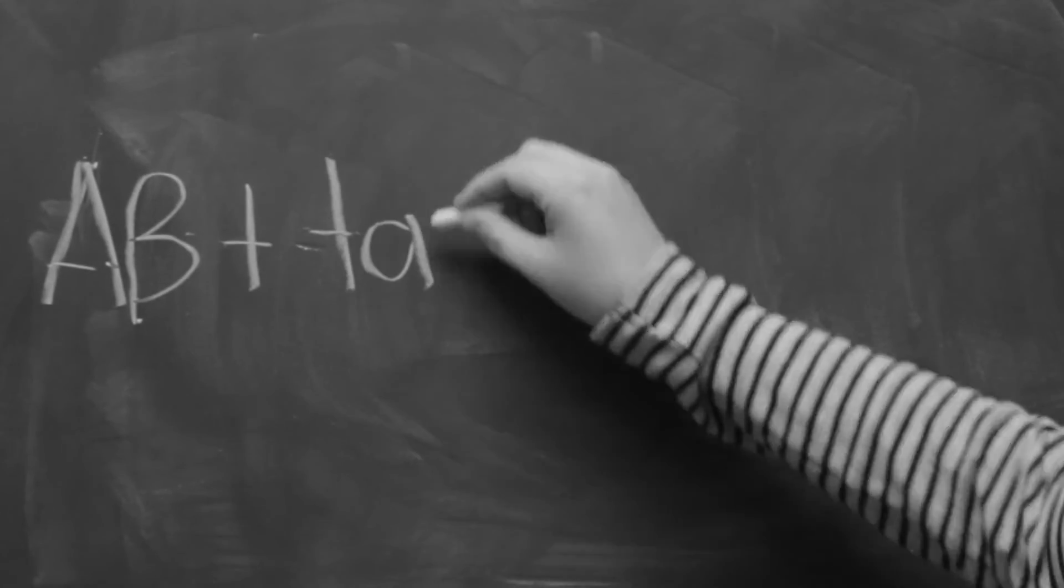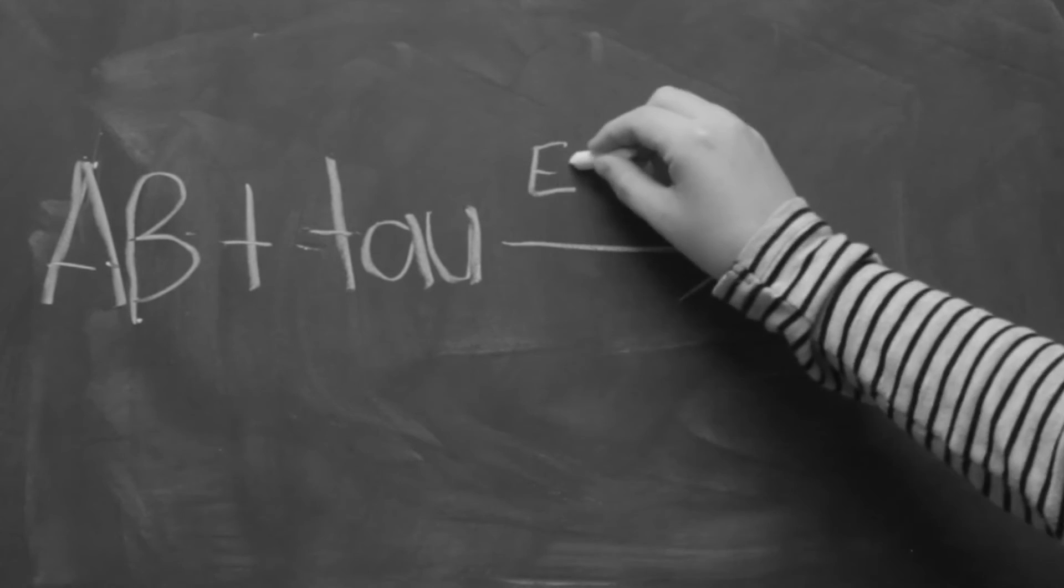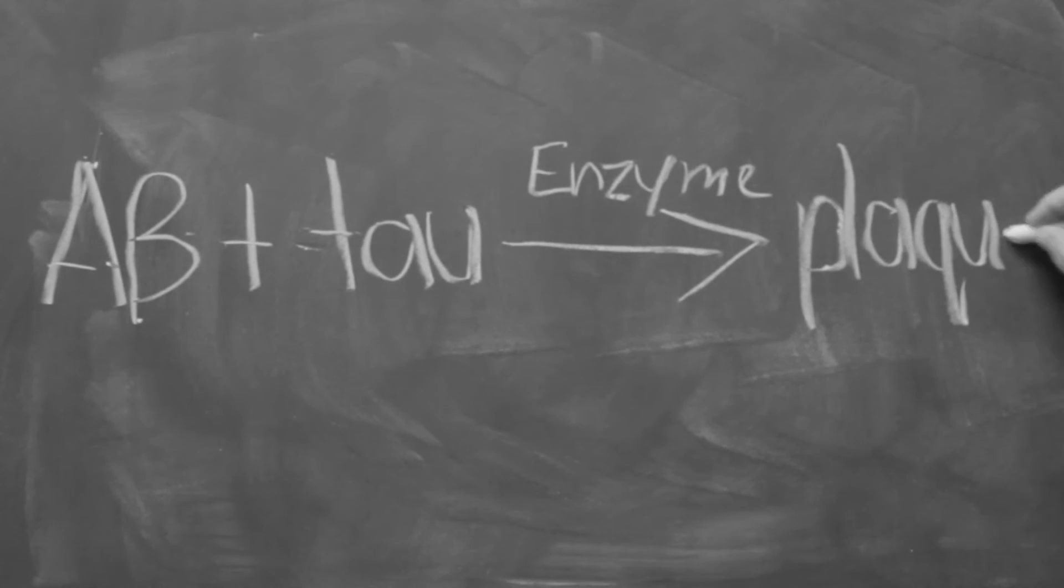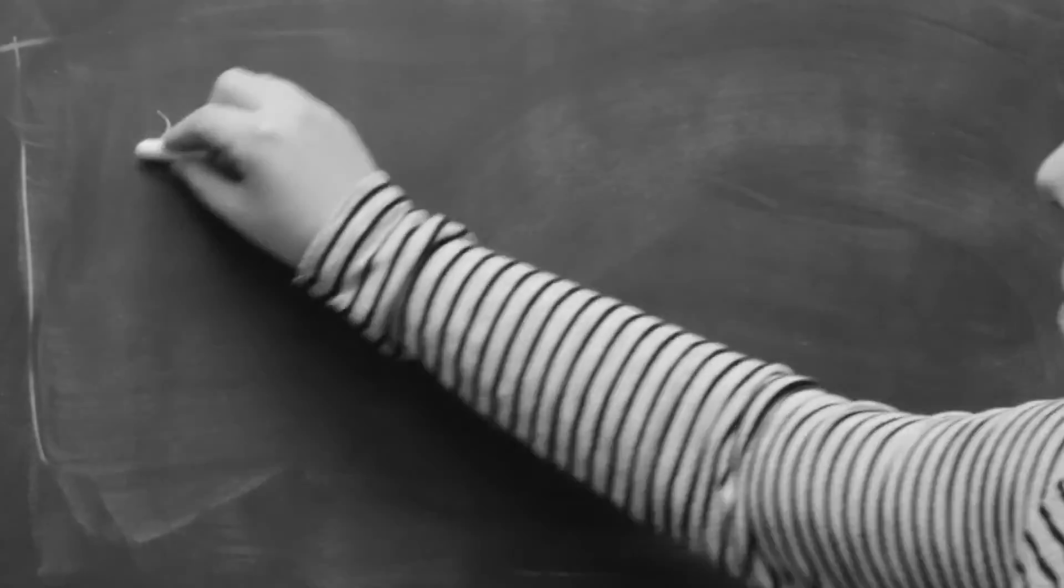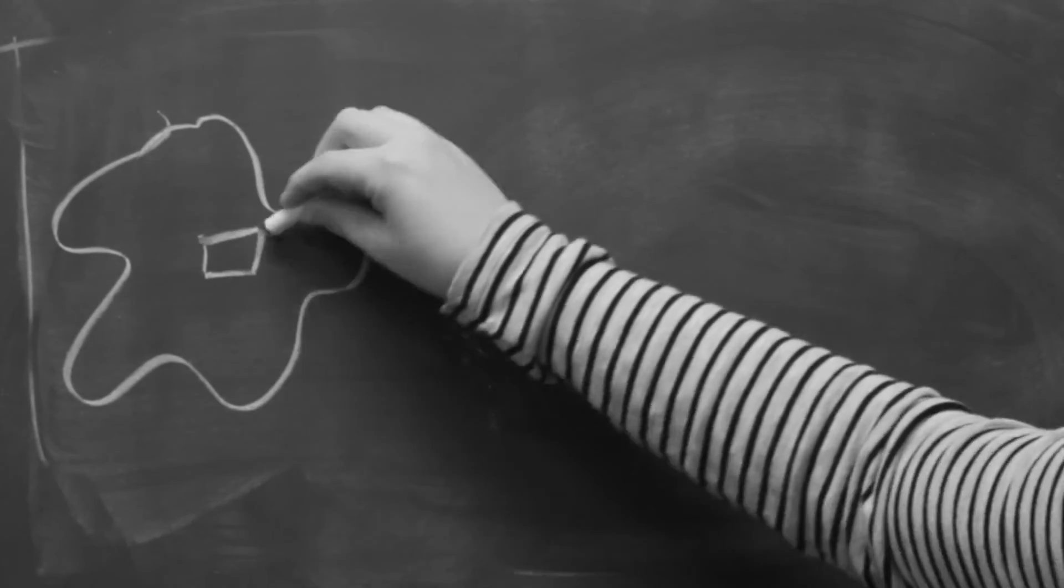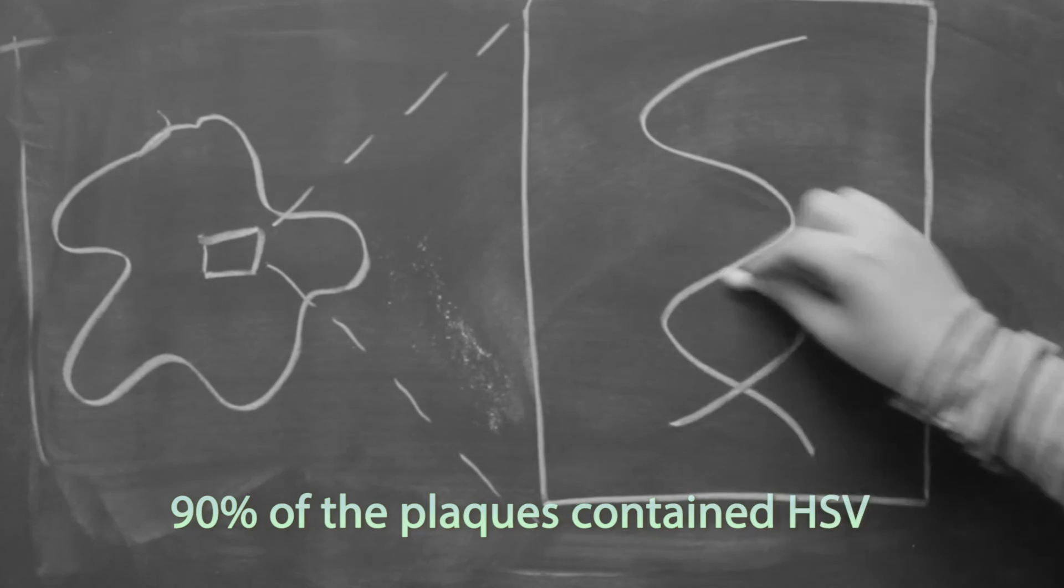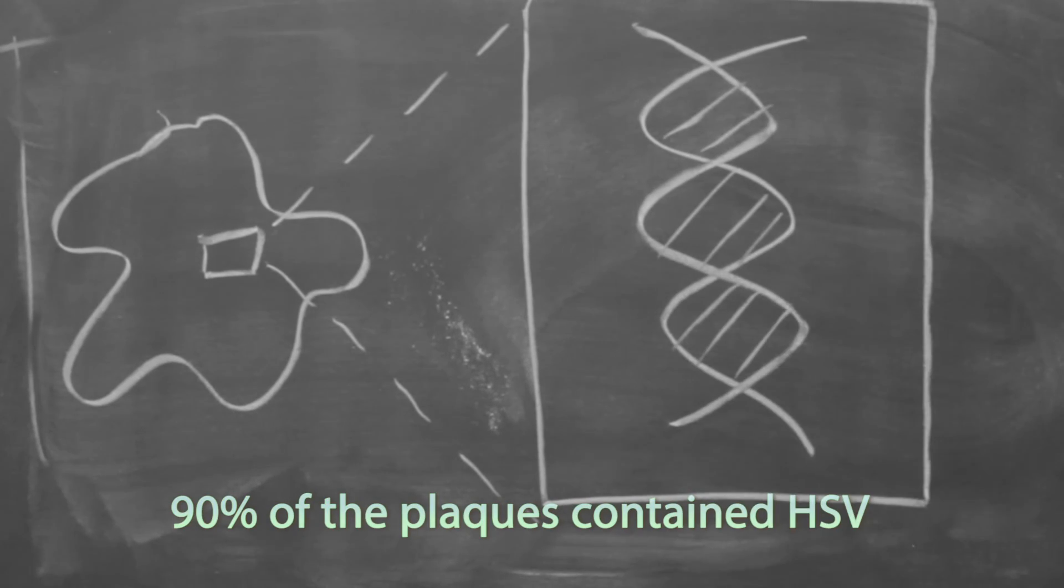Scientists have also observed the production of enzymes that mediate the formation of beta-amyloid and tau proteins by neuronal cells infected by HSV. Also, HSV has been shown to coexist in beta-amyloid plaques, with 90% of the plaques containing HSV DNA.